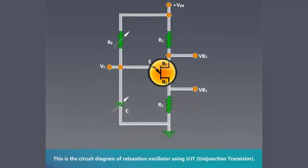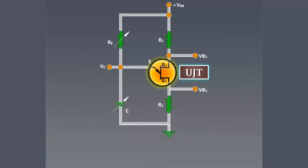This is the circuit diagram of relaxation oscillator using UJT, that is, unijunction transistor. This is UJT.